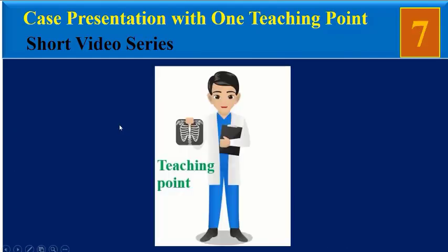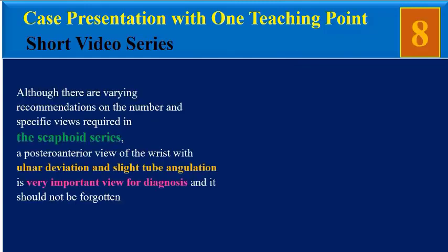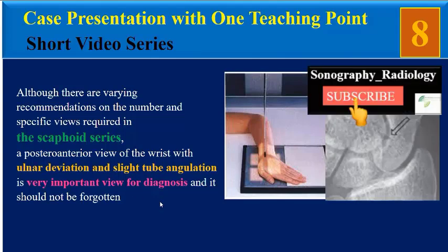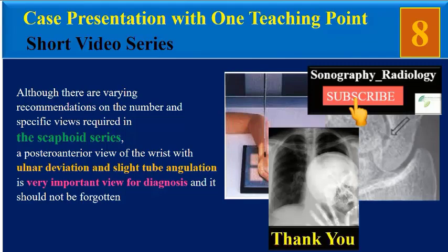The teaching point we can take from this case is that although there are varying recommendations on the number and specific views required in the scaphoid series, a PA view of the wrist with ulnar deviation and slight tube angulation is a very important view for diagnosis and it should not be forgotten. Thank you for your attention.